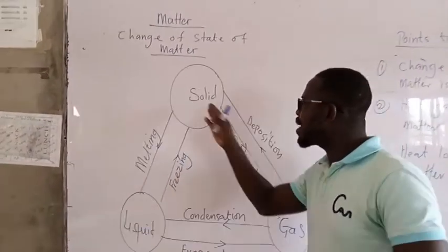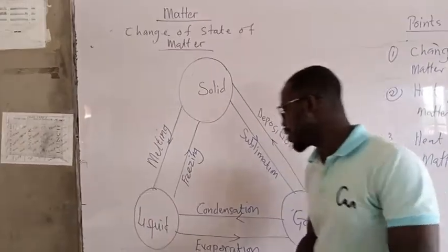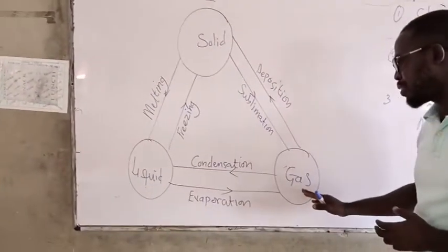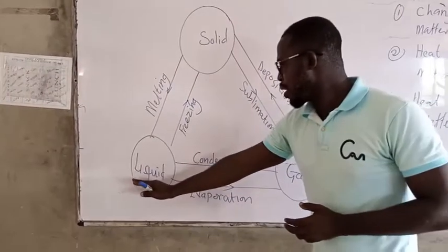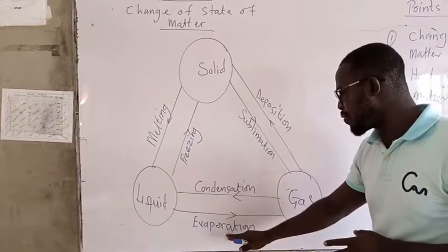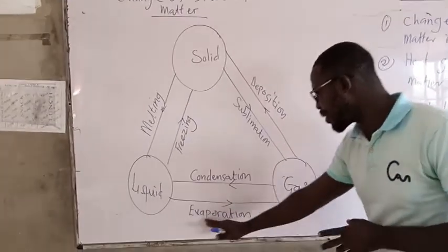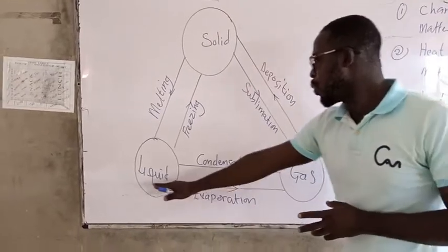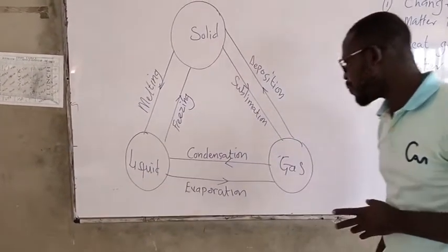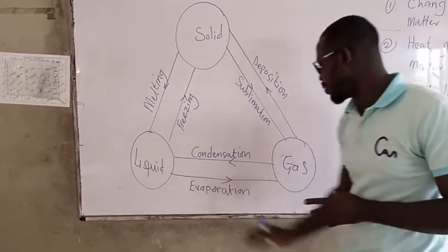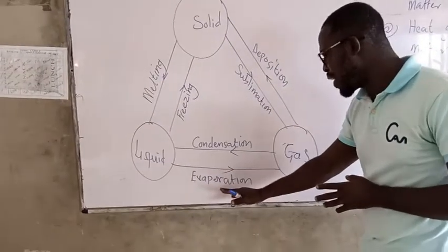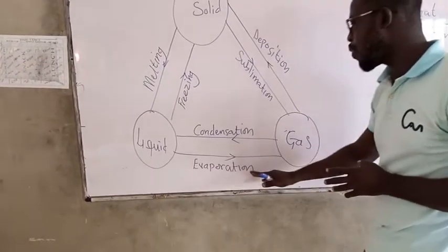And melting is done by the application of heat. So, when we apply heat to a solid, it changes to liquid. Liquid can also change into gas. This is also made possible by the application of heat. The process by which a liquid changes its state from liquid to a gaseous state by the application of heat is what we call evaporation.